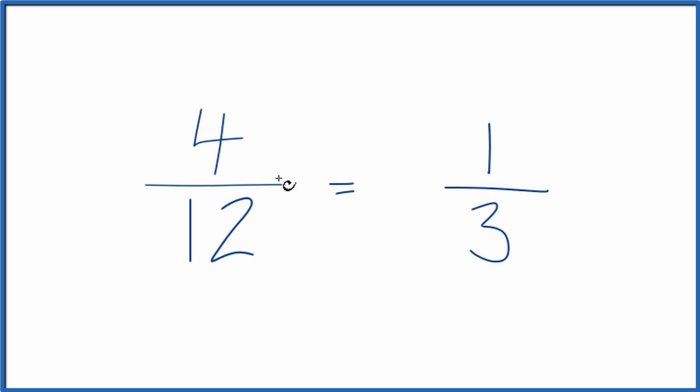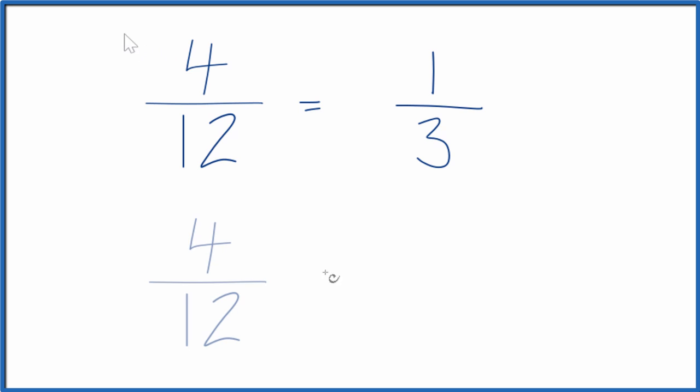4 twelfths, if you divide 4 by 12 or 1 by 3, you get the same decimal. Let's find another equivalent fraction for 4 twelfths. Instead of division, we could use multiplication, and we could multiply 4 twelfths by 1. That would just give us 4 twelfths.